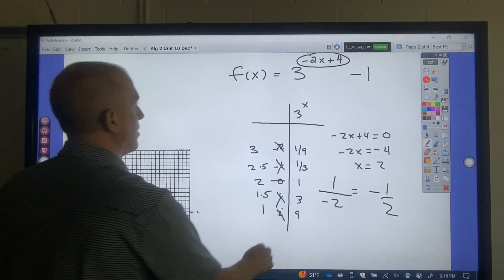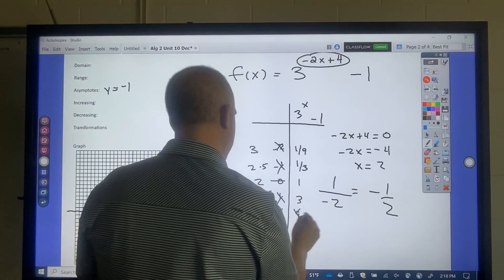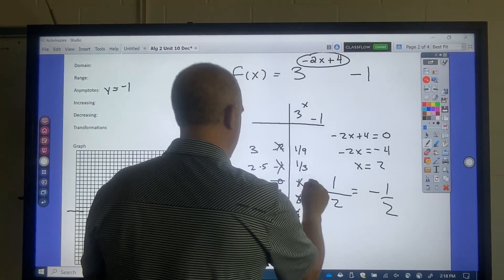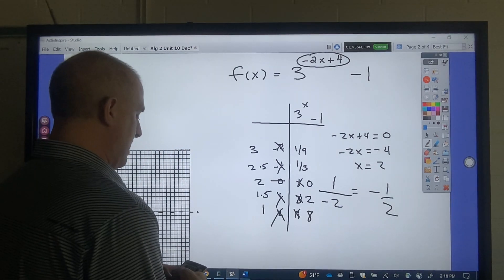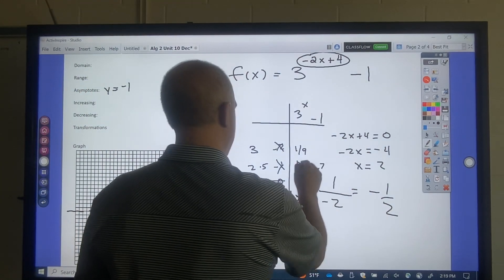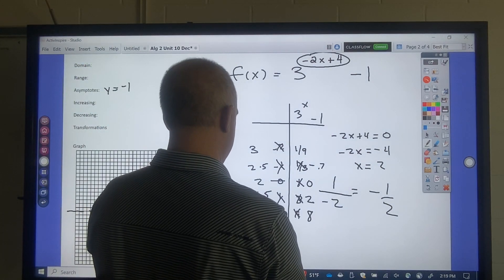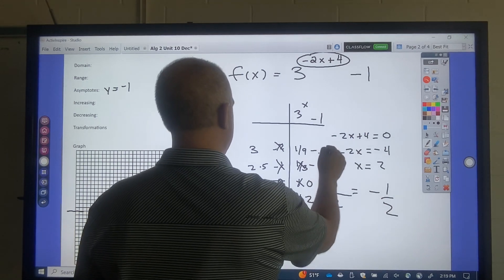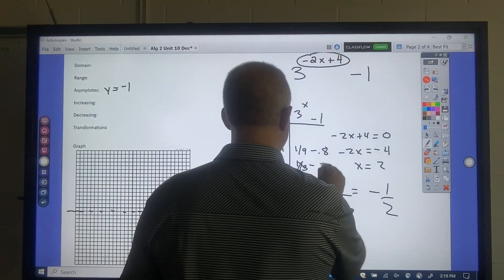Then what I'm going to do is I'm going to subtract 1 by all of those. So that's going to be 8, 2, 0. 1 divided by 3 is 0.3 minus 1 is negative 0.7. 1 divided by 9 is 0.1 minus 1 is negative 0.8. Actually, hold on. 1 divided by 3, 1 third minus 1, negative 0.6 repeating, sorry.